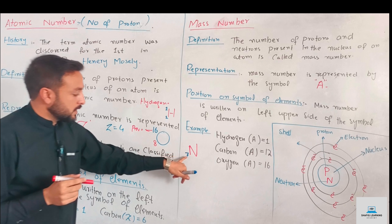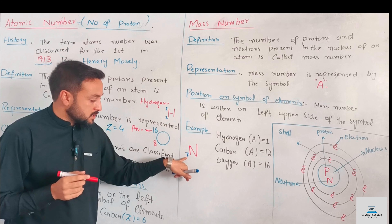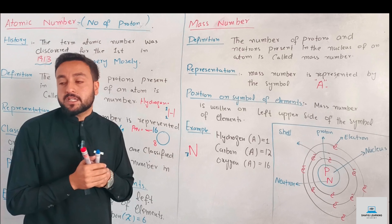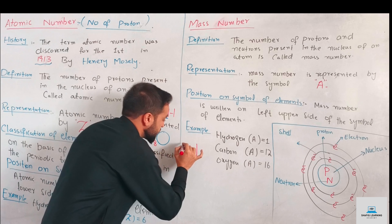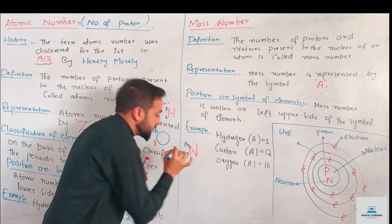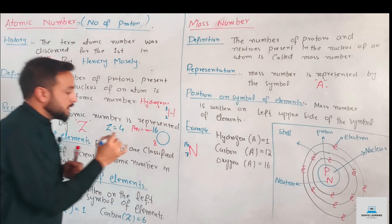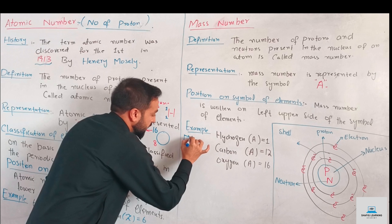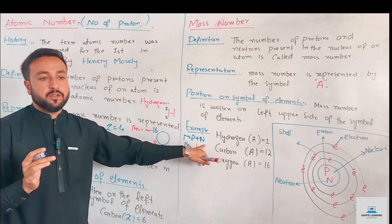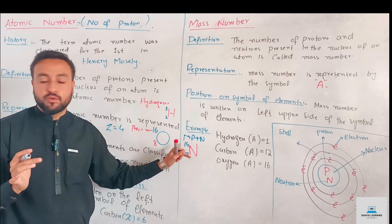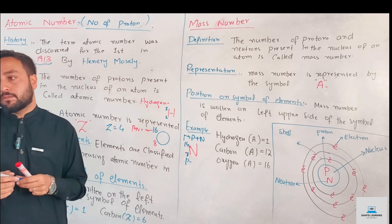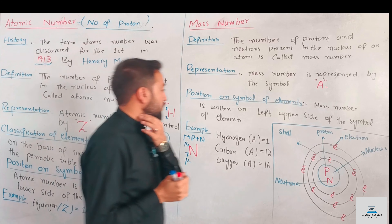For nitrogen, the mass number is 14. This means protons plus neutrons equals 14. The atomic number represents the proton number only.